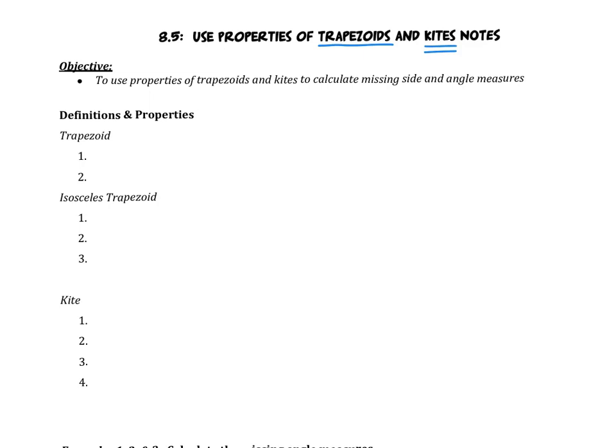We are going to start with definitions and properties of the three figures that are listed: a trapezoid, an isosceles trapezoid, and a kite, and then we'll start using them.